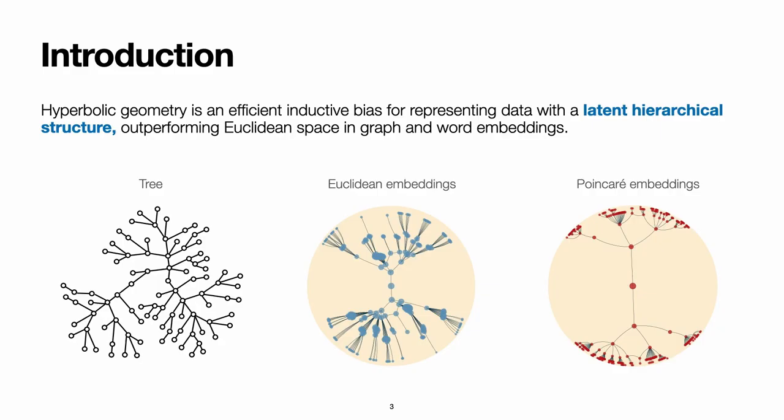In this paper, we addressed the use of hyperbolic geometry to embed images. This strategy initially appeared as a way to embed data assumed to have a latent hierarchical structure, such as knowledge graphs, words, ontologies, or taxonomies.